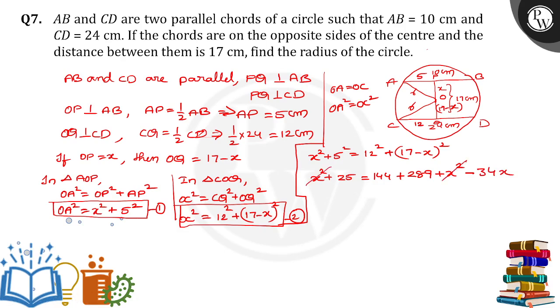X square cancels. If I transpose 34X to LHS and 144 plus 289 minus 25, we will get 34X is equal to 408. Then X is equal to 408 divided by 34, we will get X value as 12.